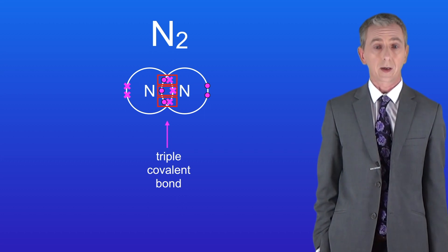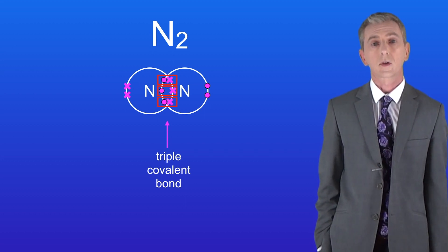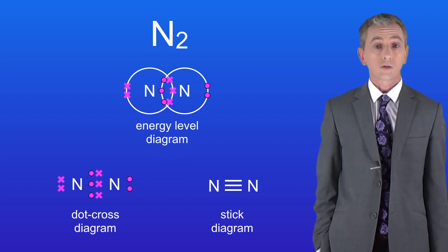This forms a triple covalent bond because we have three shared pairs of electrons. Here are the dot cross diagram and the stick diagram for the nitrogen molecule.